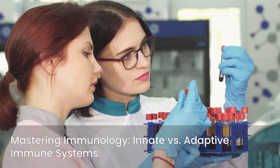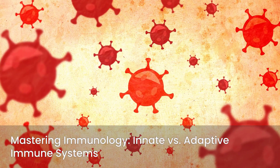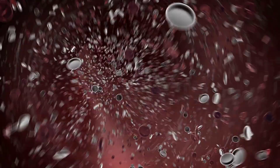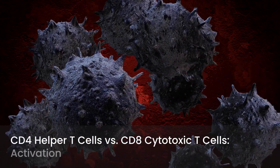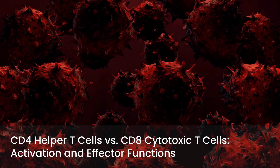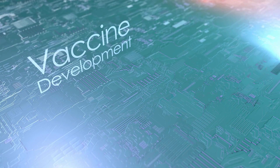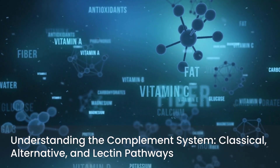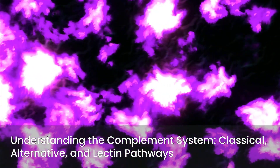Immunology is a beast on its own, but mastering the basics is crucial. Understand the fundamental differences between the innate and adaptive immune systems — what are the key players in each? Know the roles of T-cells, B-cells, antibodies, and the complement system. For T-cells, differentiate between CD4 helper T-cells and CD8 cytotoxic T-cells — understand their activation and their functions. For B-cells, know their role in antibody production and memory, how they get activated, and what class switching is. The complement system is complex, but focus on the classical, alternative, and lectin pathways — know their initiators and key downstream effects like opsonization and cell lysis.